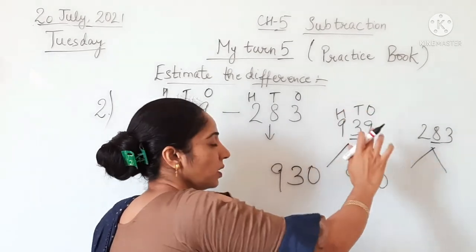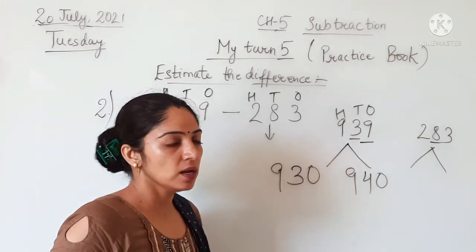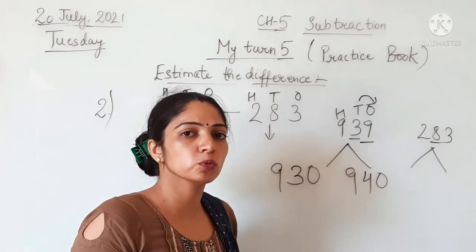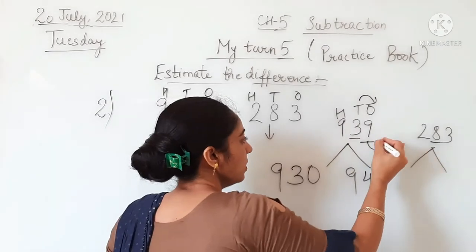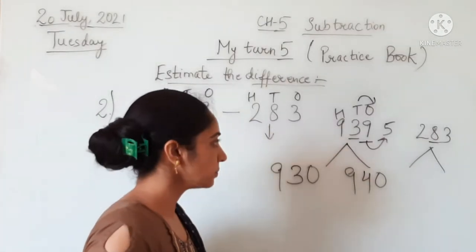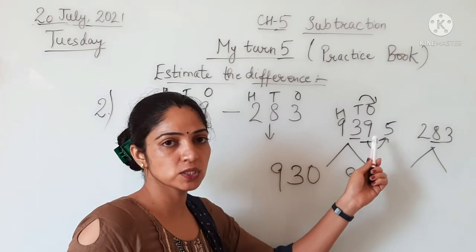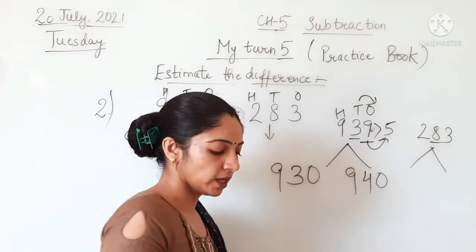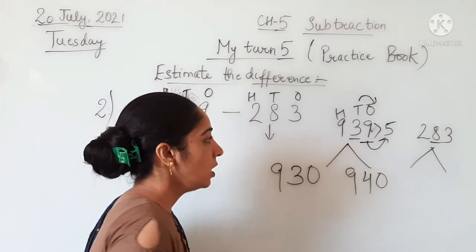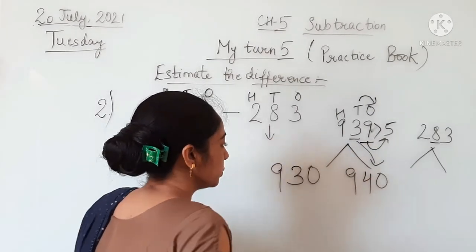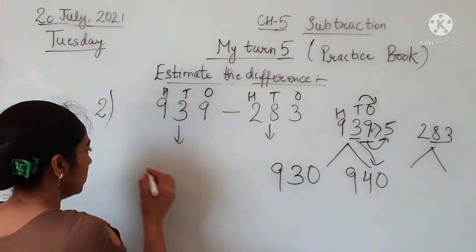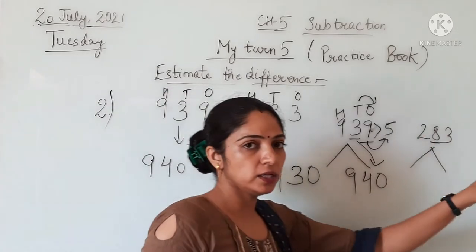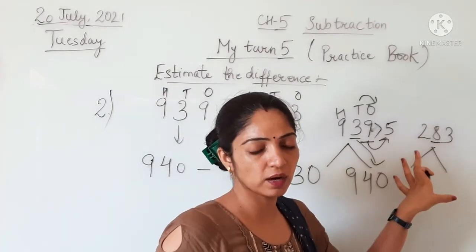Now we compare its ones place digit with 5. Because we have to round off the number to the nearest ten, we compare the digit just before that place with 5. On comparing this 9 with 5, we can see that 9 is greater than 5. So it means that this number will be rounded to 940.